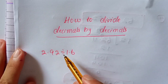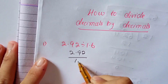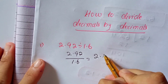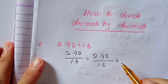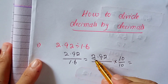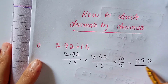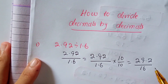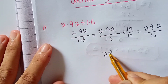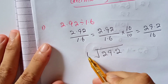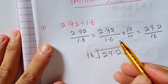In this question we have to divide 2.92 by 1.6. So 2.92 divided by 1.6, multiplied by 10 divided by 10. When we multiply 2.92 by 10 we get 29.2 divided by 16. Now we can divide 29.2 by 16 easily. How many times does 16 go into 29? 16 times 1 is 16.